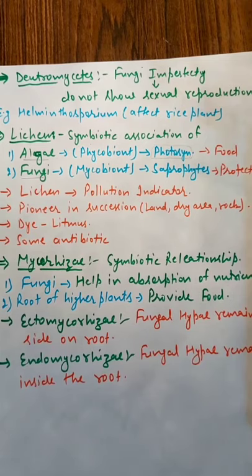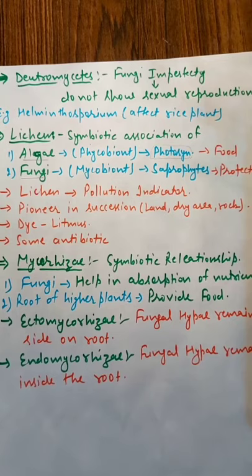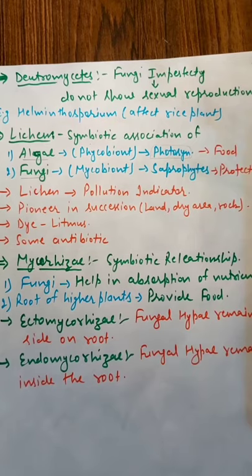Lichen are pioneers in succession. Succession is in rocky areas or dry areas or land which converts to fertile land. So soil formation starts. Lichen break down the rock by releasing acidic content. They also produce dye. The dye which is used in litmus paper, famous for testing acidic or basic nature, that is made from lichen.